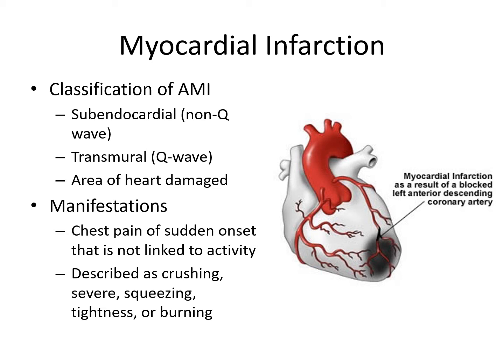Acute MIs can also be described by the area of the heart that is damaged. For example, occlusion of the left anterior descending artery affects blood flow to the anterior wall of the left ventricle, and that would be called an anterior MI.